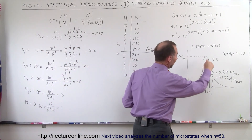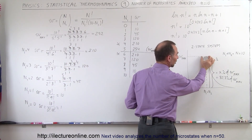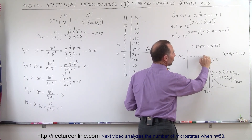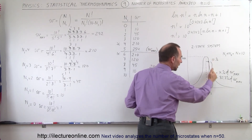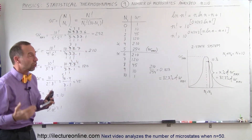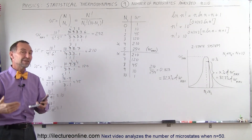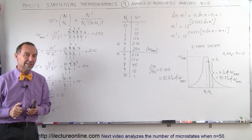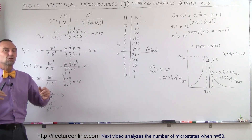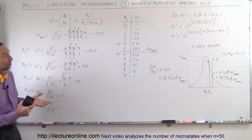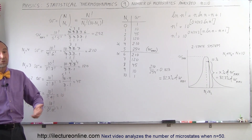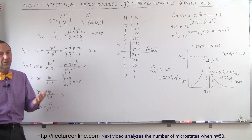What we will see, however, is that at the top the distribution becomes flat — it really doesn't change much initially until the numbers become disparate between n1 and n2, and then it begins to drop off rather quickly. We'll see what that looks like when we have populations much larger than 10 — say 50, 100, 1,000, and so forth. That's a general analysis of what the distribution looks like for the number of microstates in a two-state system with a population of 10 items — for example, 10 coins being flipped, which can be heads or tails.